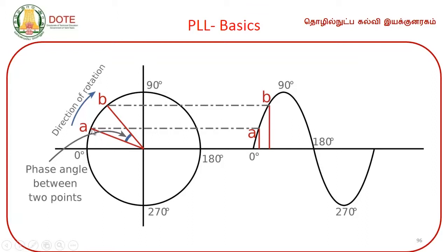Consider point A on the circle — it can be represented in terms of magnitude and angle. At 0 degrees angle, A is at a certain point. Consider another point B at the same radius but at a different angle. So A and B are in different phase. The phase is this angular difference between the two points — that angular difference in terms of angle is the phase of A and B. There is a phase angle difference between these two points on this circle.